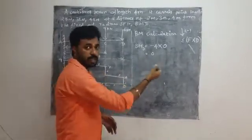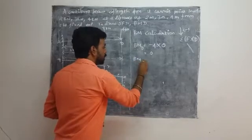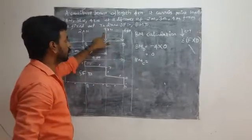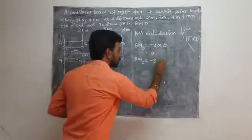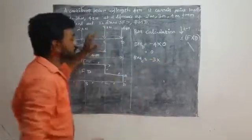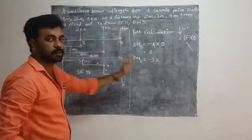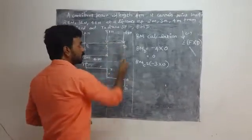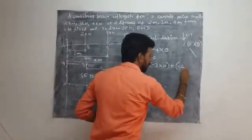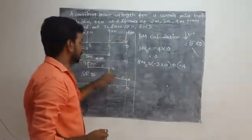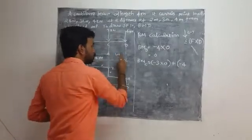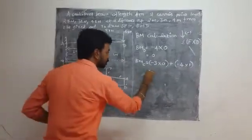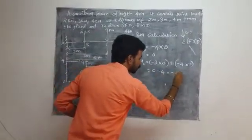Let's look at the BMD. The BM at point C — C has 3 loads. The distance for C is 1m.